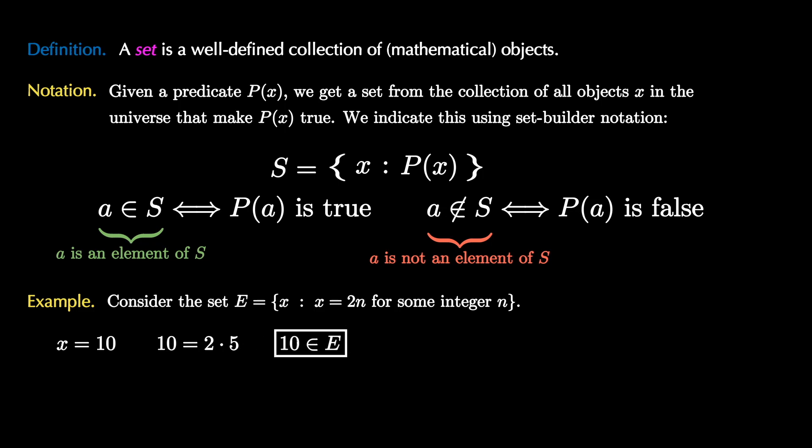On the other hand, if we consider x equals 21, we see that 21 is not twice any integer, and therefore 21 is not an element of E.